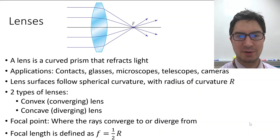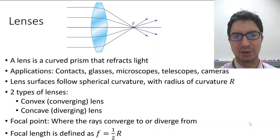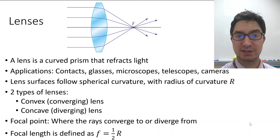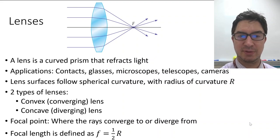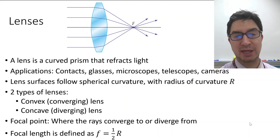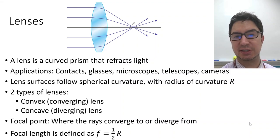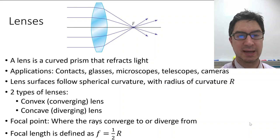Greetings physics students and welcome back. Today we're going to look at lenses. A lens is a curved prism that refracts light, just like you can see in that diagram there. Applications of lenses include contacts, glasses, microscopes, telescopes, and cameras.